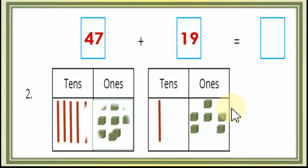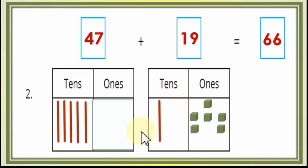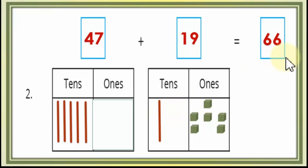يعني الـ6 دول أخليهم عند الـ9 يكونوا 1 ten. هيفضل عندي 6 في الـones. والـone ten اللي أحنا خدناها زادت هنا في خانة الـtens: بدل ما هم 4 tens هيبقى 5 tens. وما ننساش إن لسه عندنا 1 ten. 5 tens وone ten = 6 tens. So the result is 66.